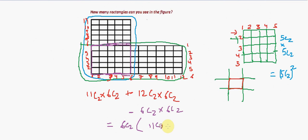6C2 is nothing but 15. 11C2 is 55 plus 66 minus 15. 55 minus 15 is 40 plus 66, 106 into 15. So we are talking about 15 into 106, which is 1590.